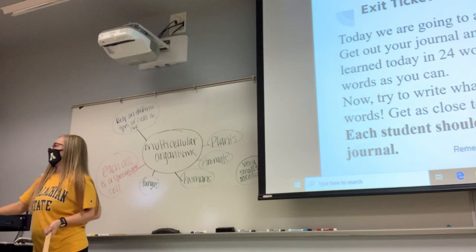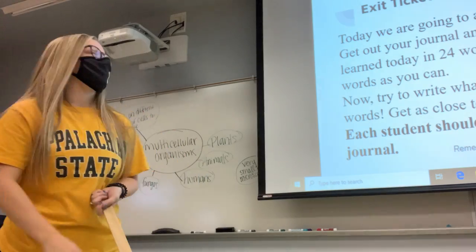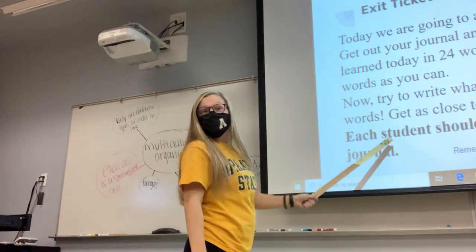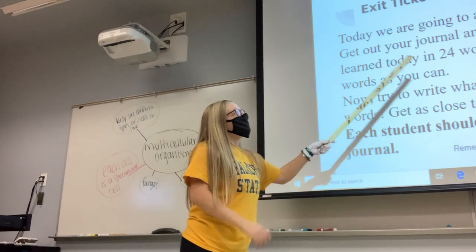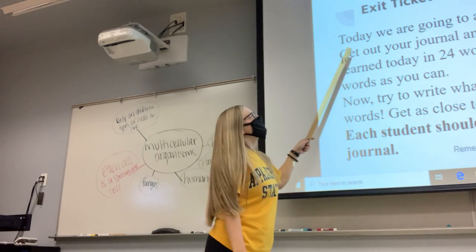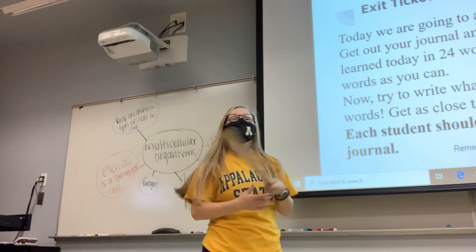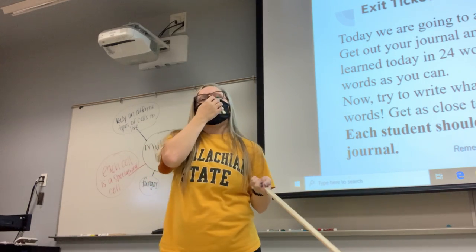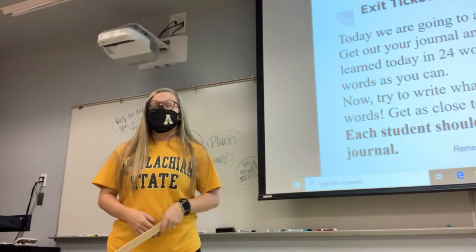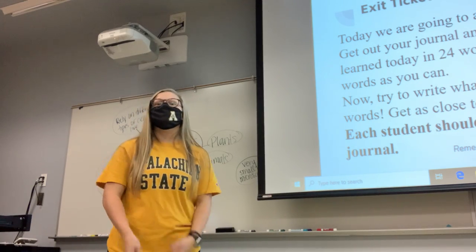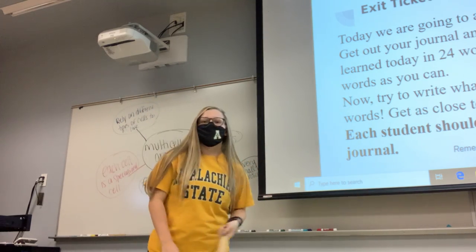Alright, now we're going to do an exit ticket. On your sheet of paper, you're going to do a 24-7 activity. Write what you have learned today in 24 words — try to get as close to 24 words as you can. If you have only five words, we need to add more. Don't write a whole paragraph either. Go ahead and write what you've learned in 24 words in your journals.